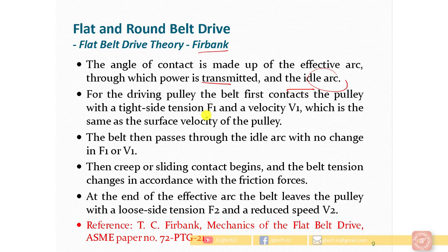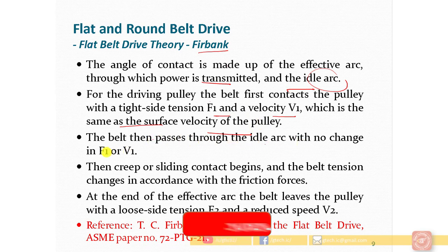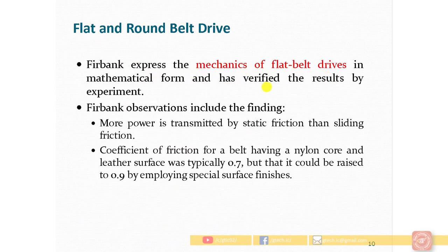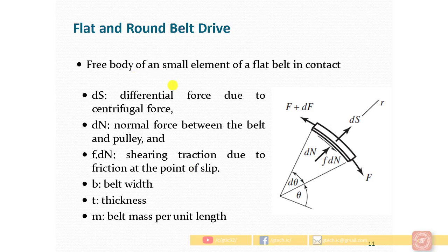According to Firbank's theory, for the driving pulley, the belt first contacts the pulley with tight side tension F1 and velocity V1, which is the same as the surface velocity of the pulley. The belt then passes through the idle arc with no change in F1 or V1 since no power is transmitted. Then creep or sliding contact begins, tension changes due to friction forces, and at the end of the effective arc the belt leaves the pulley with loose side tension F2 and reduced velocity. A required coefficient of friction for a nylon core and leather surface belt is typically 0.7, but can be raised to 0.9 with special surface finish to minimize slip.